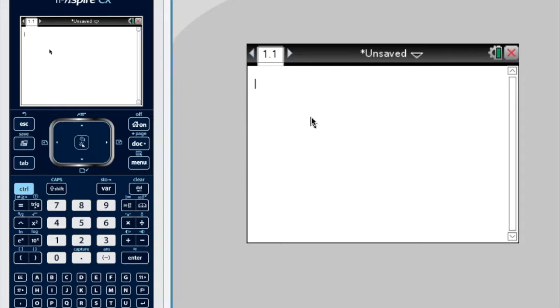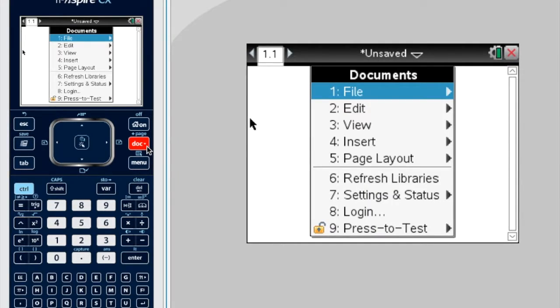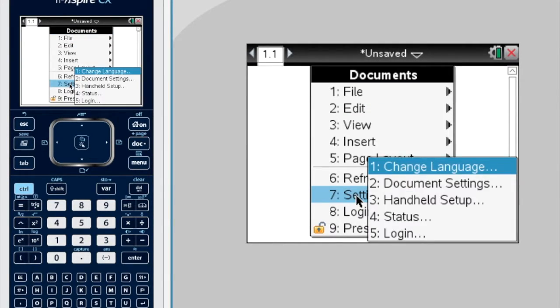The default setting of a calculator document is to use real numbers. To change that, press document, settings, document settings.